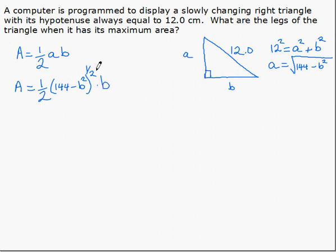Of course, because this has an exponent, we can't bring in the B to make the differentiation any easier, so we have to use the product rule. So the derivative becomes one-quarter, 144 minus B squared